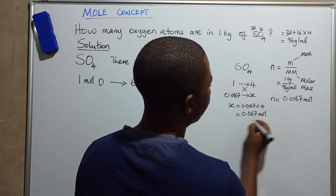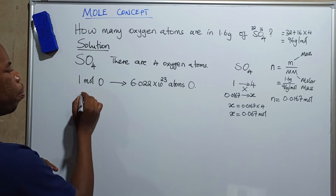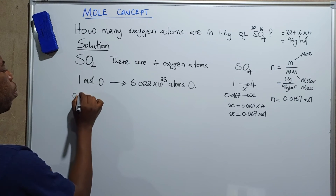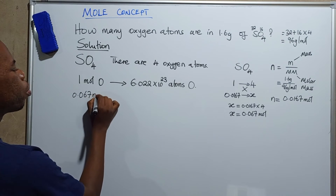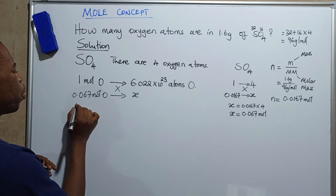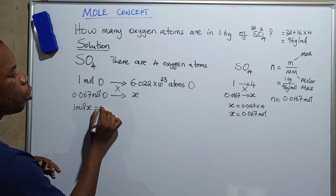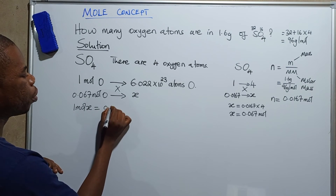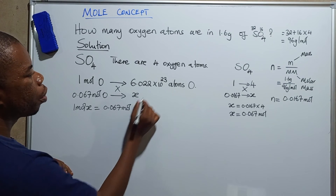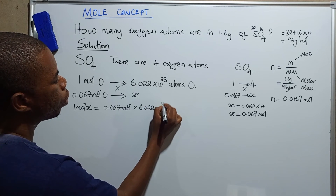So 0.0667 moles of oxygen is the number of moles of oxygen in this whole compound. Now we apply Avogadro's number: if one mole of oxygen contains 6.022 times 10 to the power 23 atoms, then for 0.067 moles of oxygen we set up a cross-multiplication: x equals 0.067 moles times 6.02 times 10 to the power 23 atoms per mole.